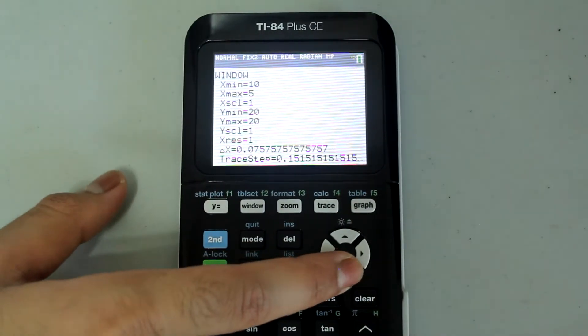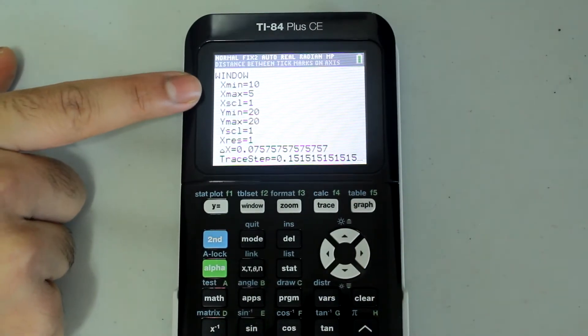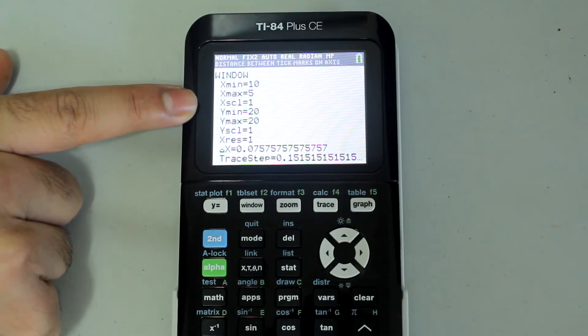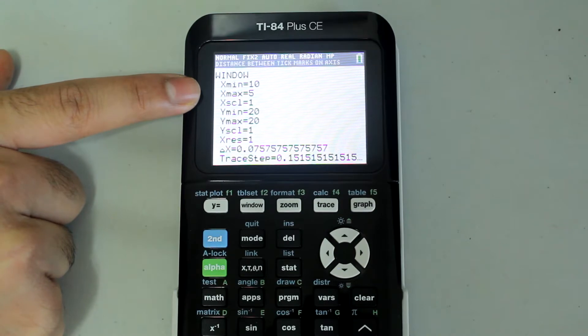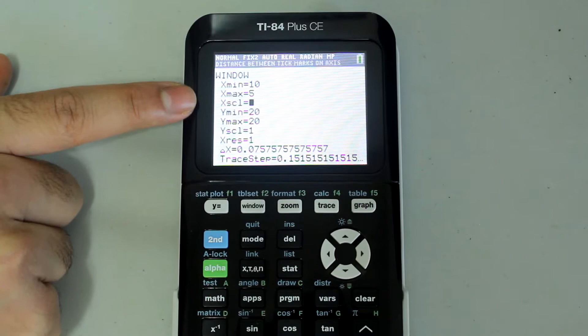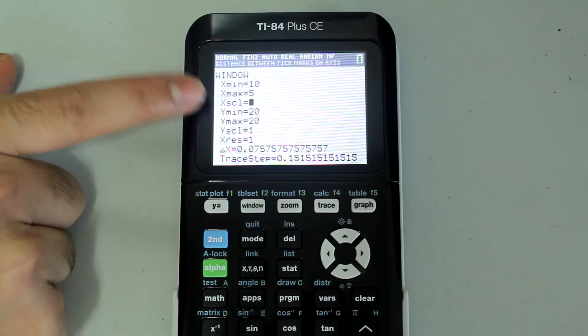And right away, I can see that some things are off. My x min value is 10, and my x max value is 5. 10 is not less than 5, so my min value is actually greater than my max value. So I have to change that.